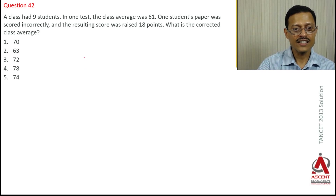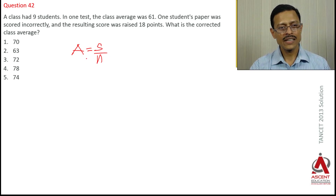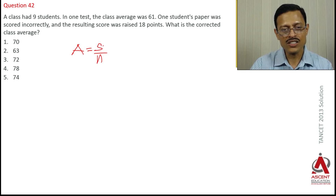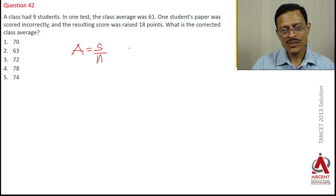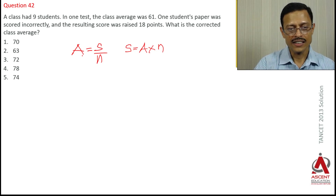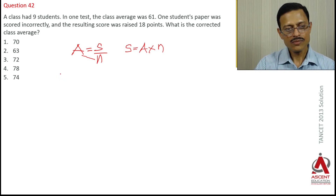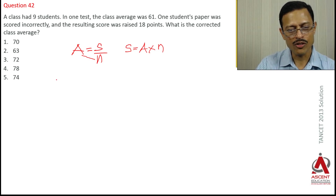Normally, if you have an average of a set of numbers, average is equal to sum divided by number of elements. So if you cross multiply, sum is equal to average into number of terms.